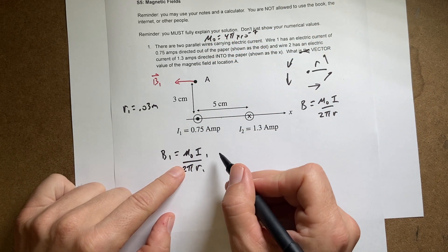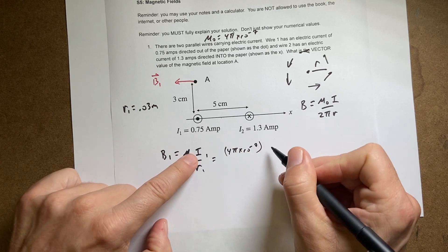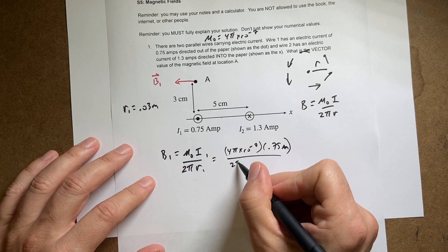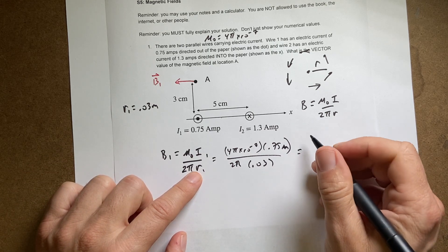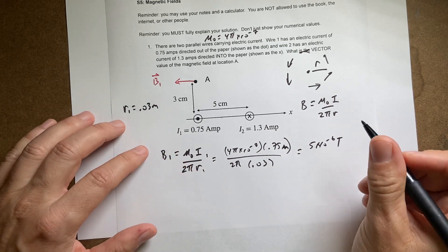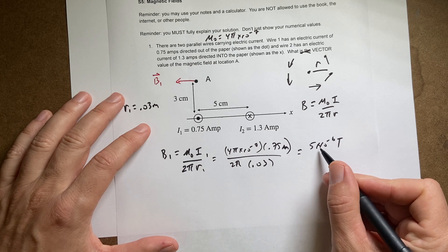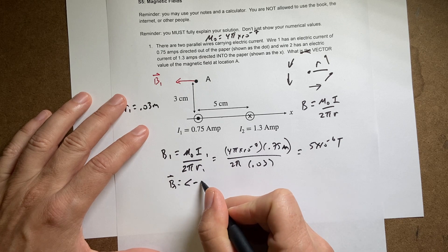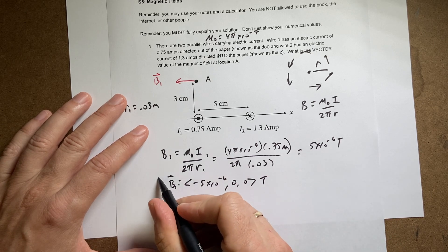So I can put in 4π × 10⁻⁷ times 0.75 over 2π times 0.03. The π's are going to cancel, and I get a magnitude of 5 × 10⁻⁶ Tesla. Now I'll make that a vector. Since it's in the negative x direction, B₁ equals (-5 × 10⁻⁶, 0, 0) Tesla.